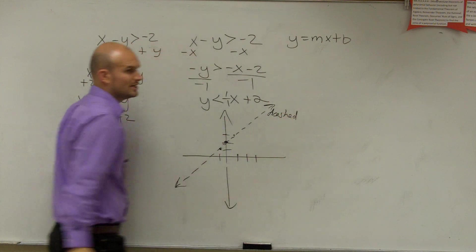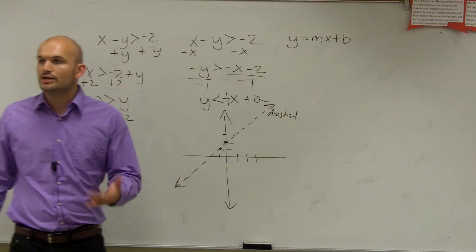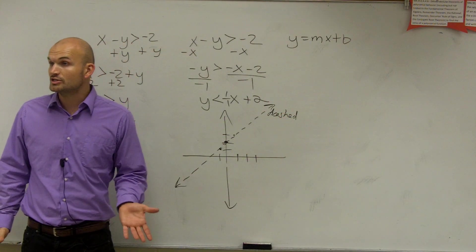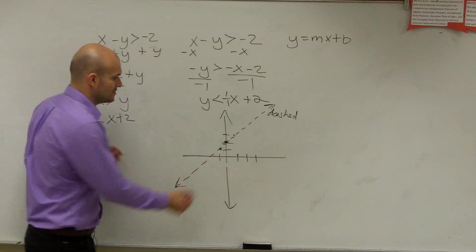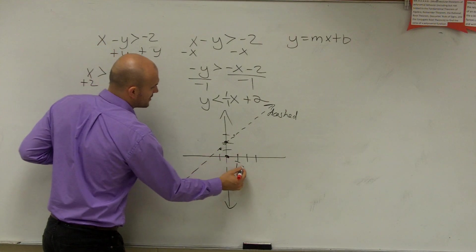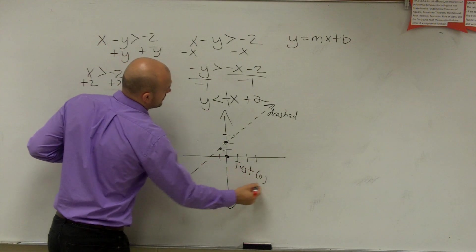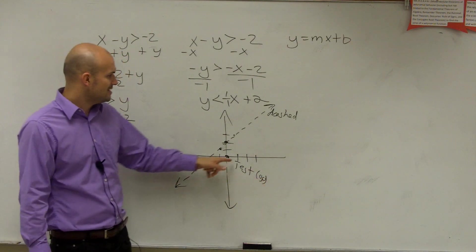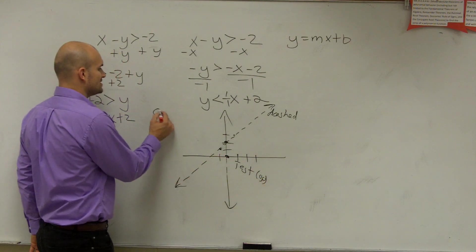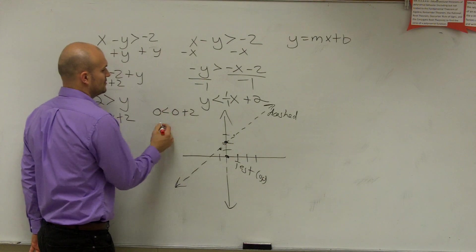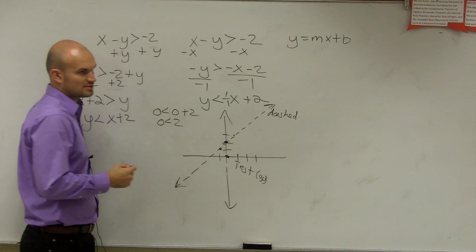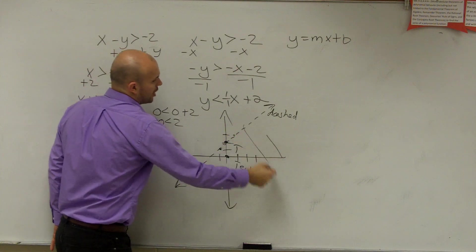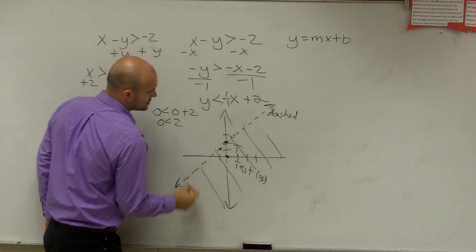Now the last thing we need to do for all inequalities, we need to include our shading. So to include where to shade, we need to do our test point. So we pick a test point. The best test point ever to pick is 0, 0, unless the graph goes through 0, 0, right? So I pick 0, 0, and then I just plug it in. 0 is less than 0 plus 2. 0 is less than 2. True or false? True. Since that point is true, all points below are going to be true.